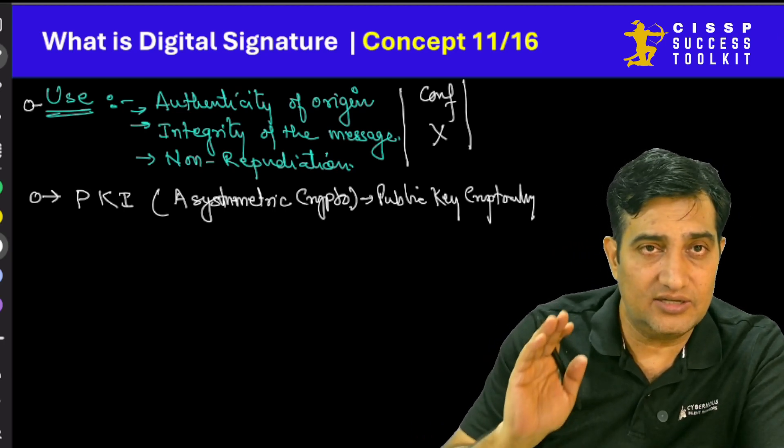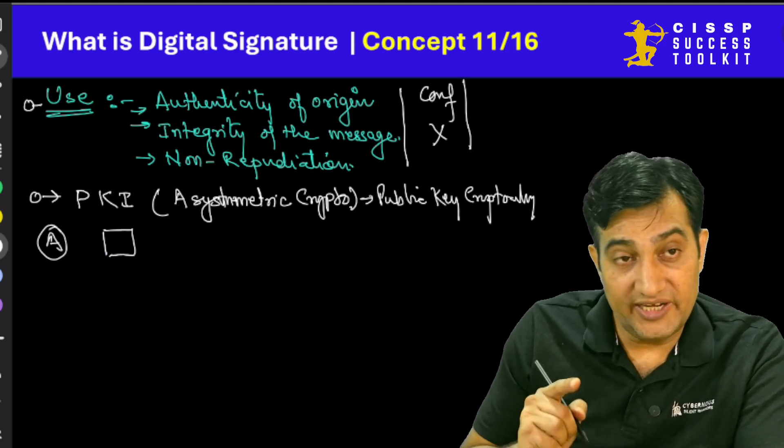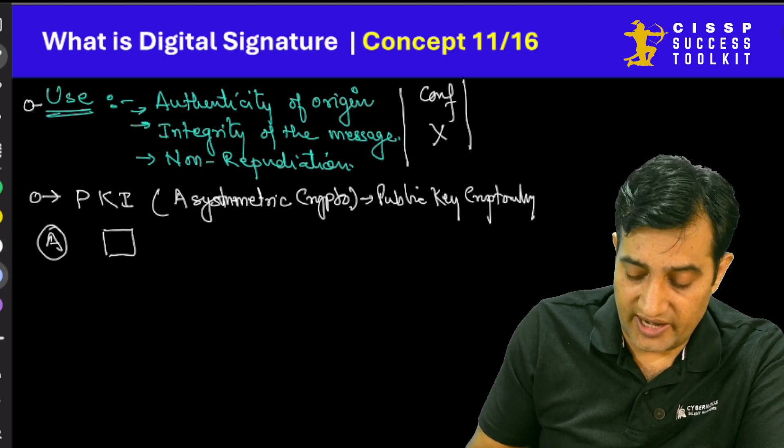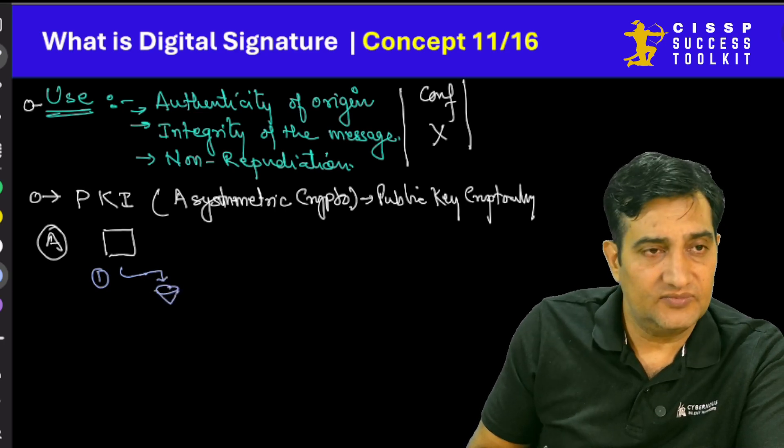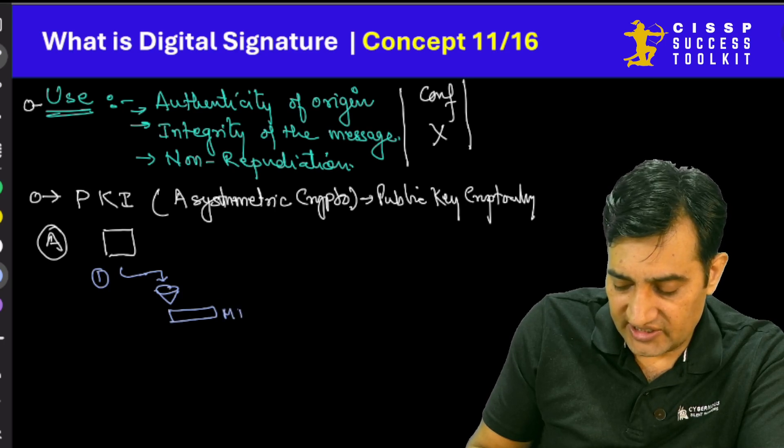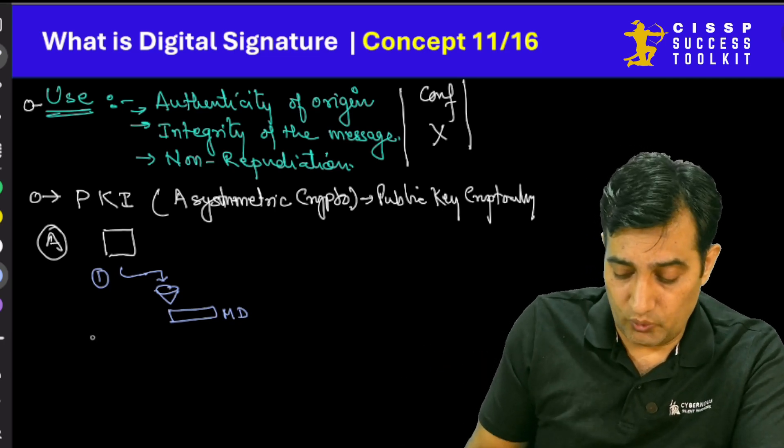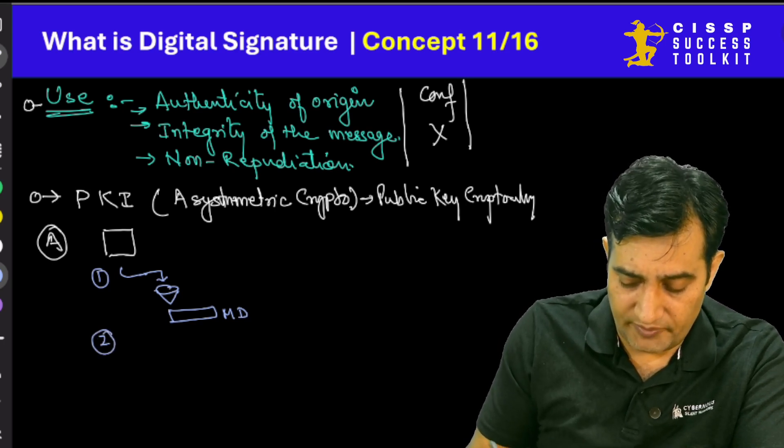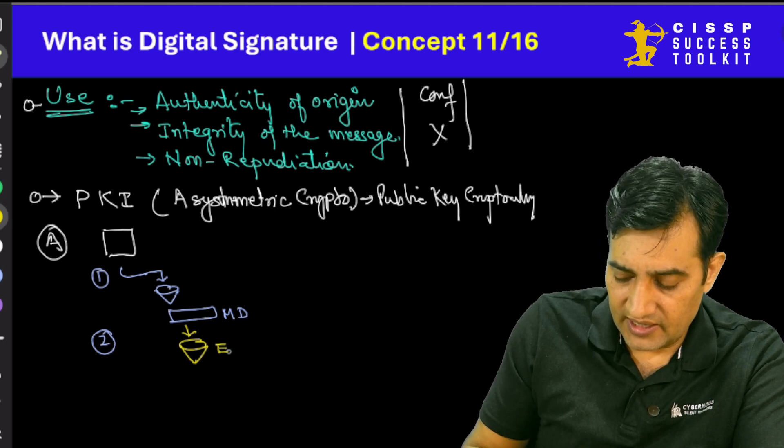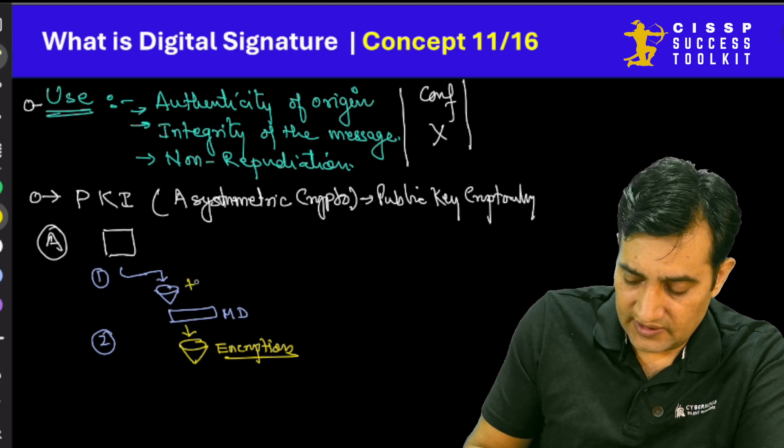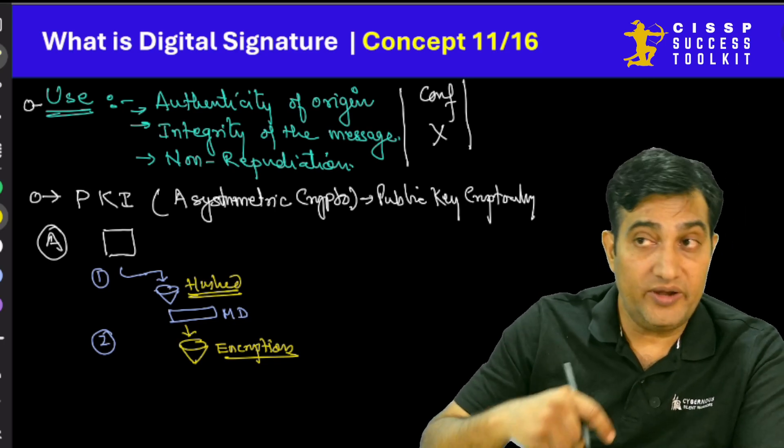Now, how does this entire digital signature actually work? Let's say Mr. A has a particular message and he wants to digitally sign this particular message. What this guy will do as number one step? He will take this particular message and he will pass it through a hashing algorithm. What will be the outcome? Outcome will be a message digest. That's your step number one. And that is very common. We do that all the time. The only difference which is very special here is they do not stop here. They go a step further.